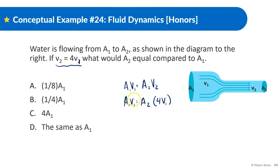A1v1 is equal to A2 times 4v1. So remember, again, they have to equal each other. So what this means is A2 here needs to be equal to one fourth of A1. And then it would all make sense. So it should be B. Moving on.